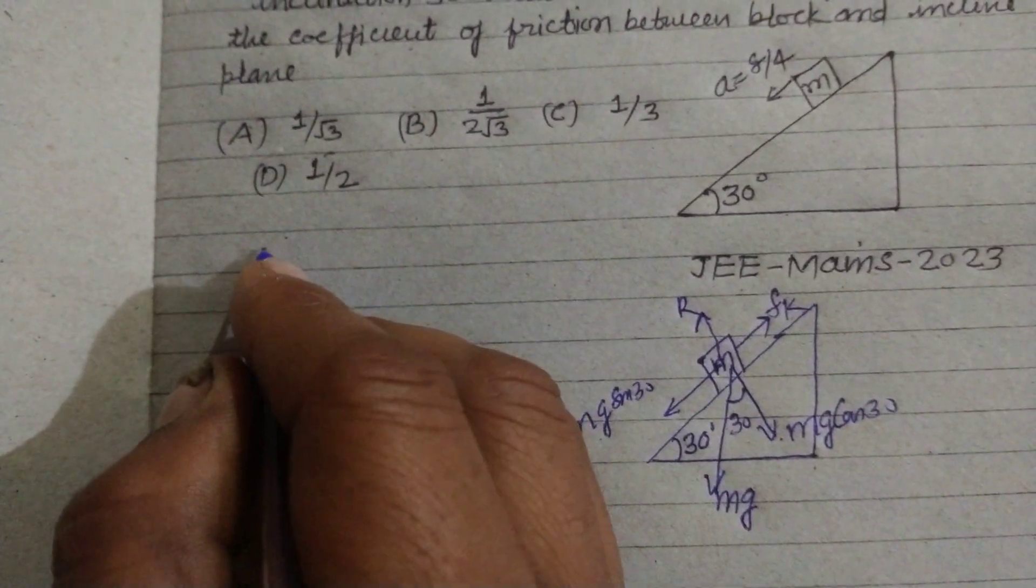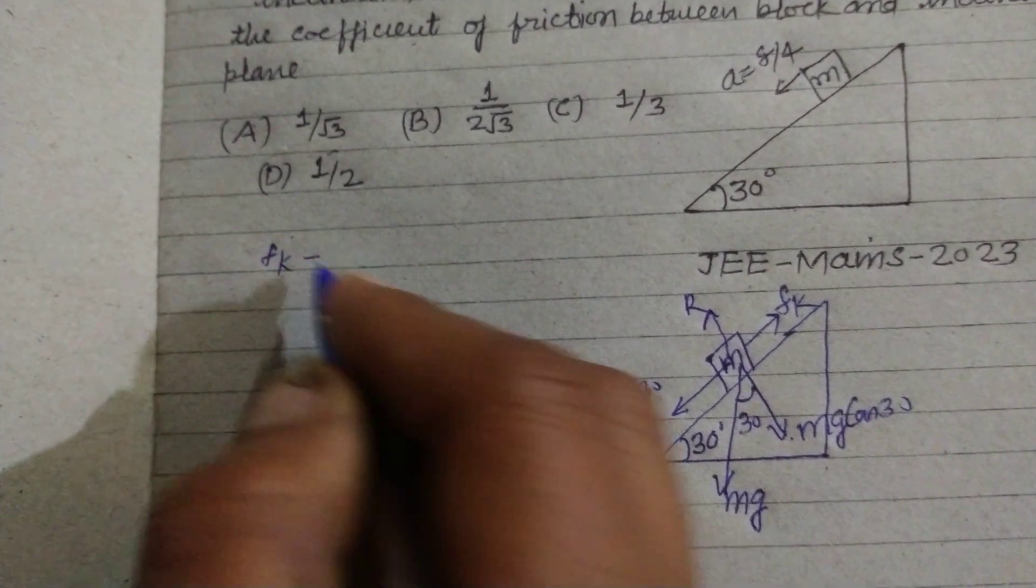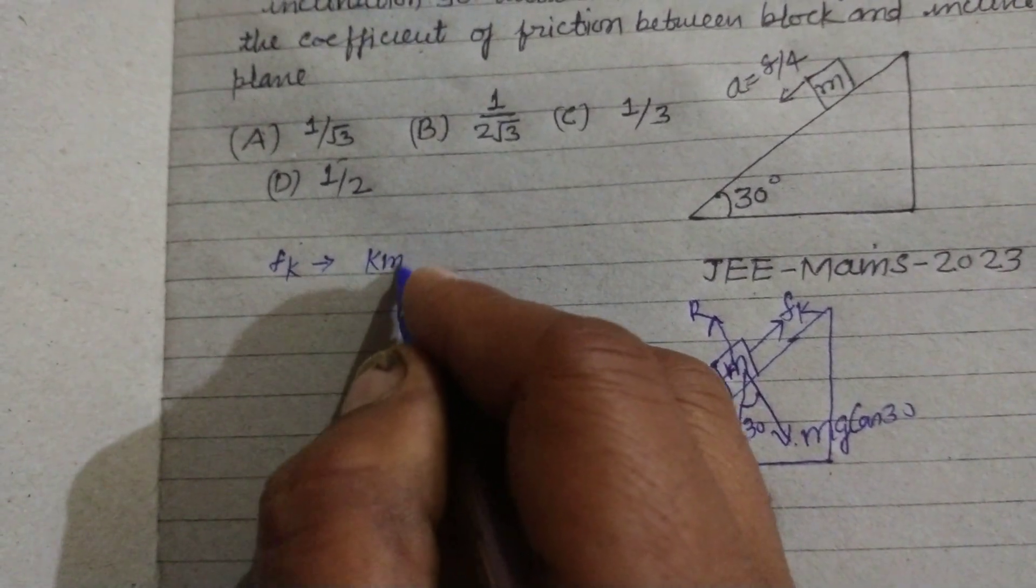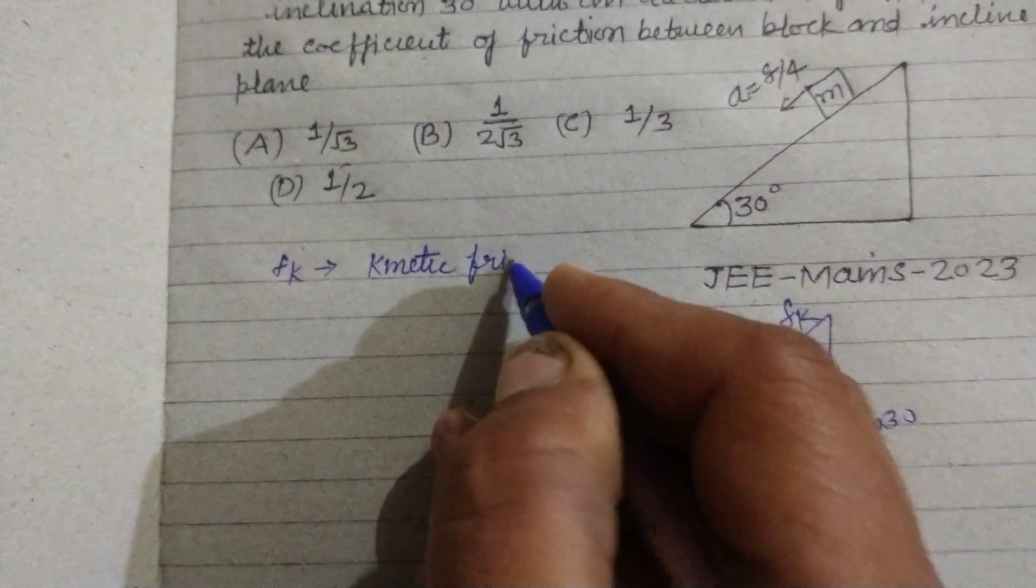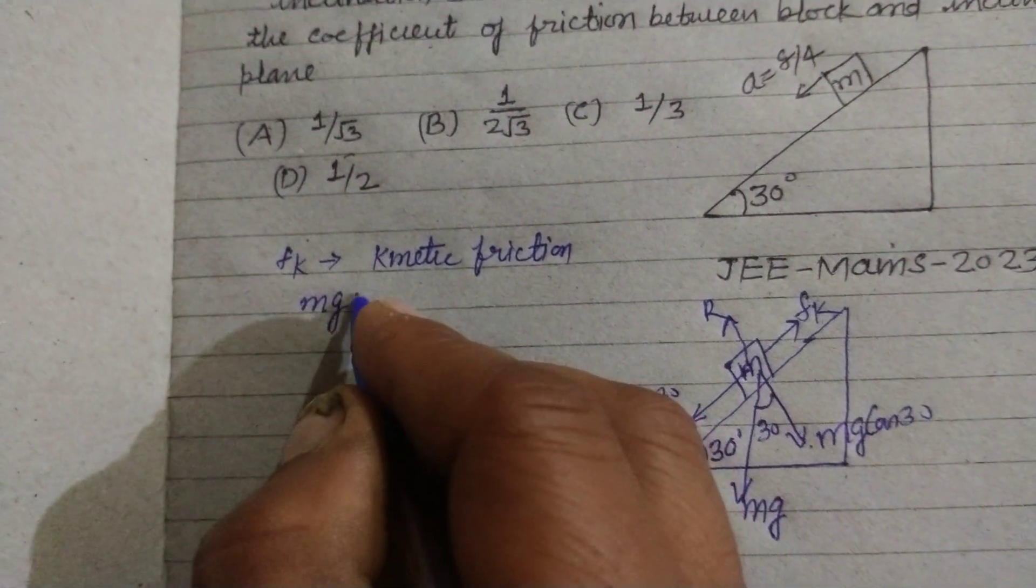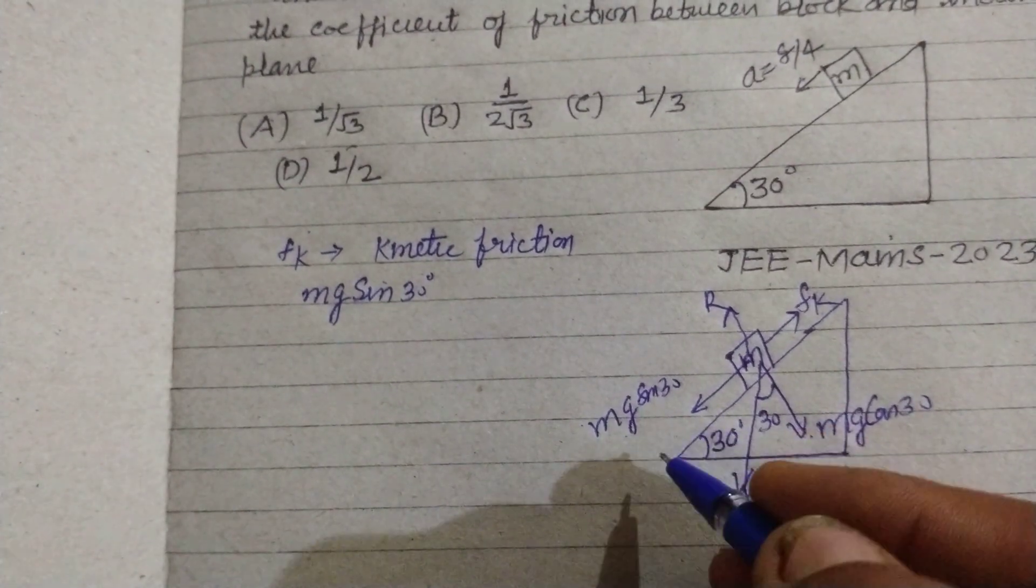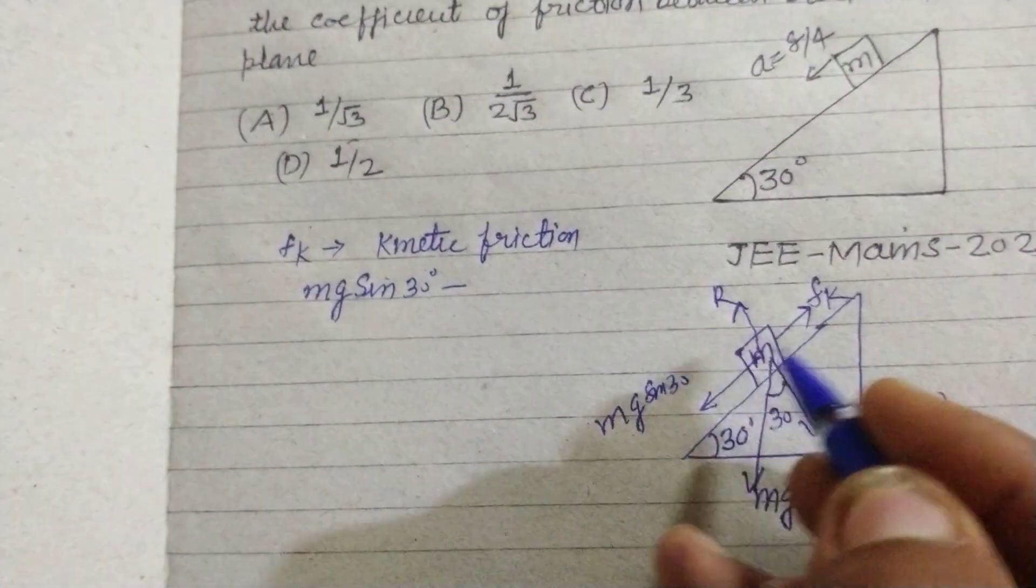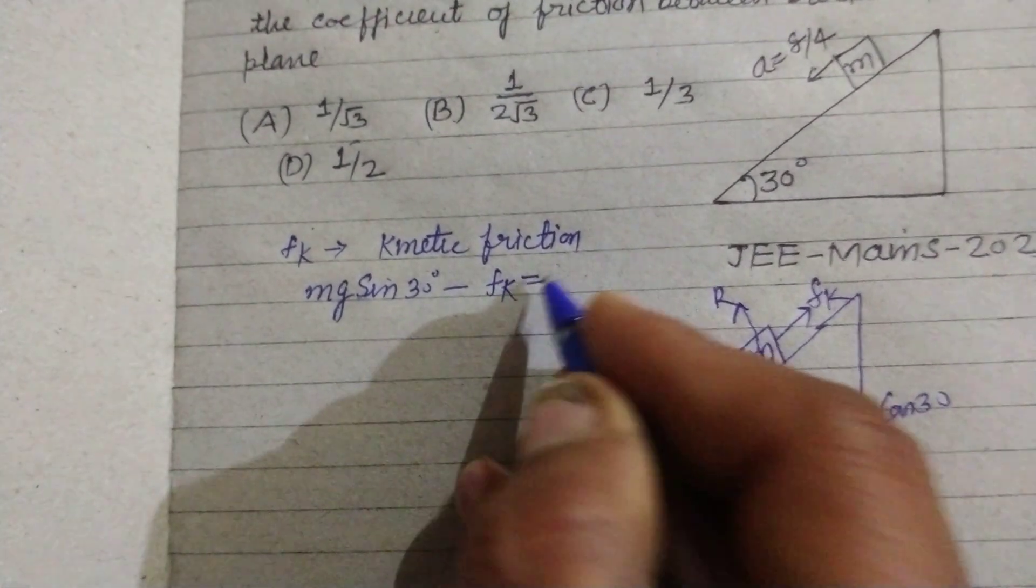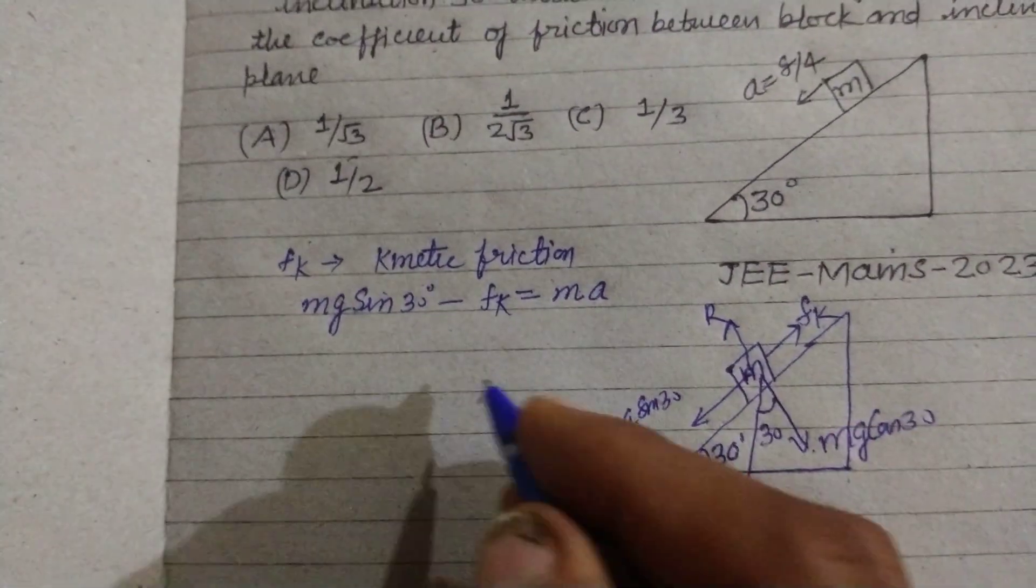Now Fk is the kinetic friction. Mg sin θ is bringing this block down the plane, so it is more than Fk. So mg sin θ minus Fk equals m times A, where A is the acceleration of the block which is coming down.